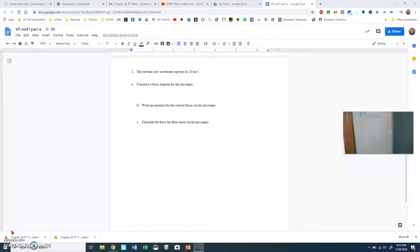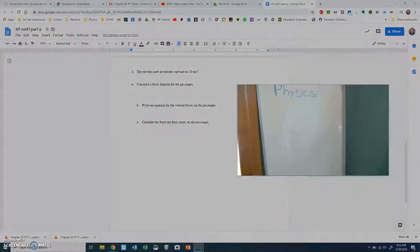So we have now got the elevator accelerating upward at two meters per second squared. The assignment says construct a force diagram, write an equation for the vertical forces on the passenger, and then calculate the force the floor exerts on the passenger. But before we do that, I want to do the force diagram and talk about the concepts.